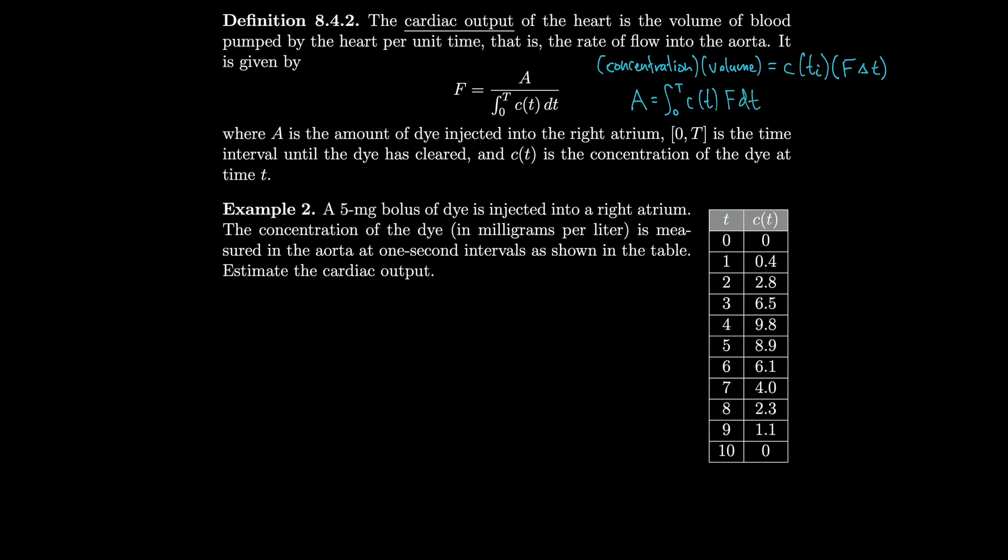Because the total amount of dye that we injected is equal to all of these concentration times volume products. We just take out F because notice the integral's with respect to t, it does not have anything to do with F. So we pull out F and then we divide by the integral to get F by itself. So we get A divided by the integral is equal to F, because F is what we wanted to begin with.